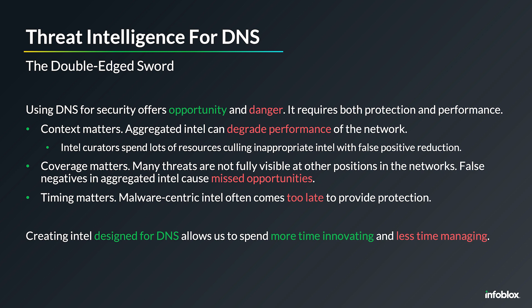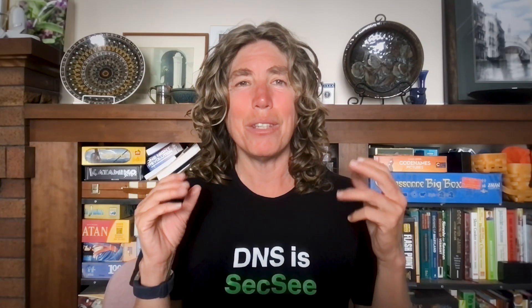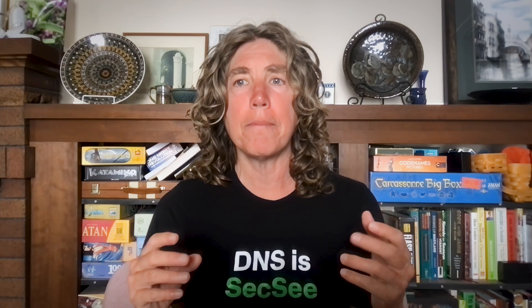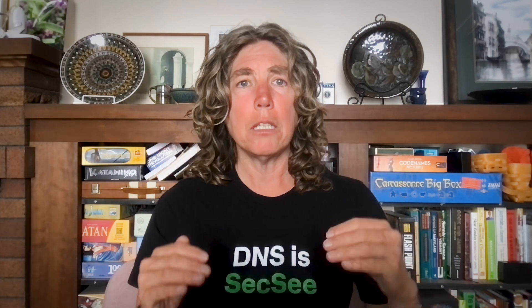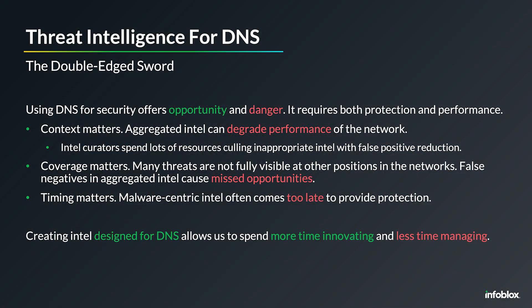What we find is that context really matters. For DNS, you need to have indicators that are related to DNS and that matter within DNS. Otherwise, you're going to disrupt that balance between protection of the network and performance of the network. We're always trying to balance protection and performance. Coverage matters too — you really want to have coverage of threats that you can see within DNS. There are a lot of threats that are not visible outside of DNS.